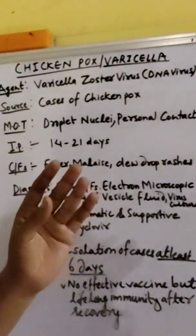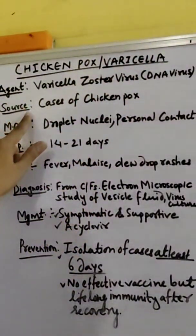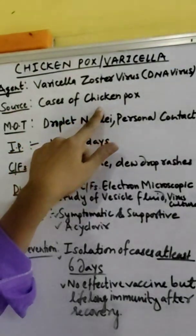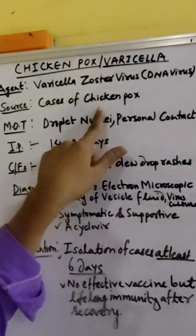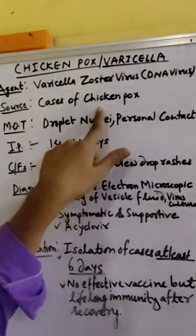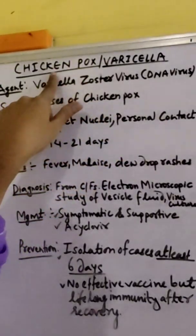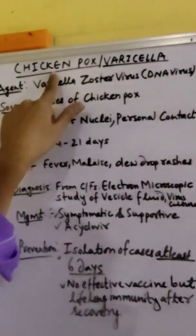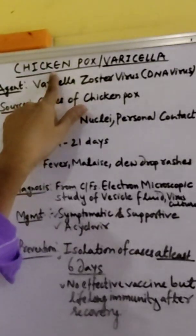Smallpox and chickenpox are both DNA viruses. Regarding the source cases of chickenpox, those who are affected will transmit it to others. Chickenpox mainly affects children, with the primary age group being up to 10 years.